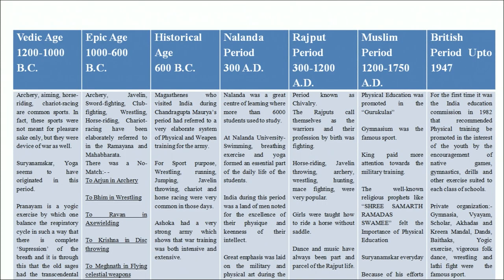In the historical age, the ancient religion of the Hindus had its first jolt. Emphasis was given to physical training, referring to a very elaborate system of physical training for the army. Wrestling, sword fighting, javelin throwing, and horse racing were common sports in those days. Training in these arts was both intensive and extensive.